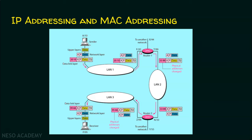This router has two interfaces. For each interface, there is an IP address and a MAC address. For the receiver computer, P is the IP address and 95 is the MAC address. IP addresses are 32 bits for IPv4 or 128 bits for IPv6, but MAC addresses are 48 bits. If this sender computer wants to send data — the sender's IP address is A and its interface MAC address is 10 — the application layer generates data, hands it to the transport layer, and then it goes to the network layer.